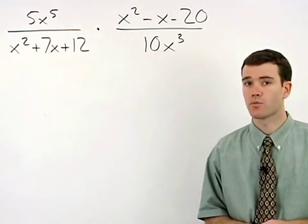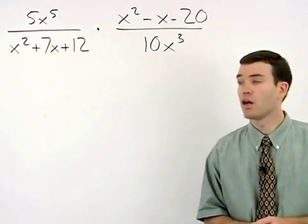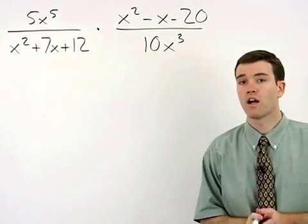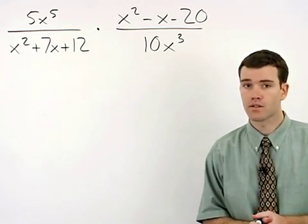Just like simplifying rational expressions, when multiplying two rational expressions together, always try to factor before you do any canceling.